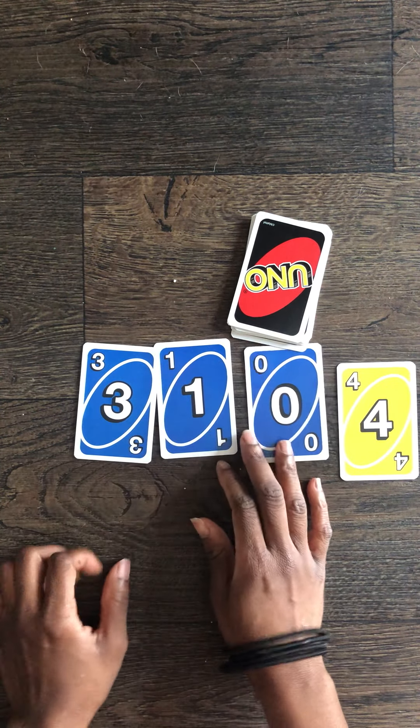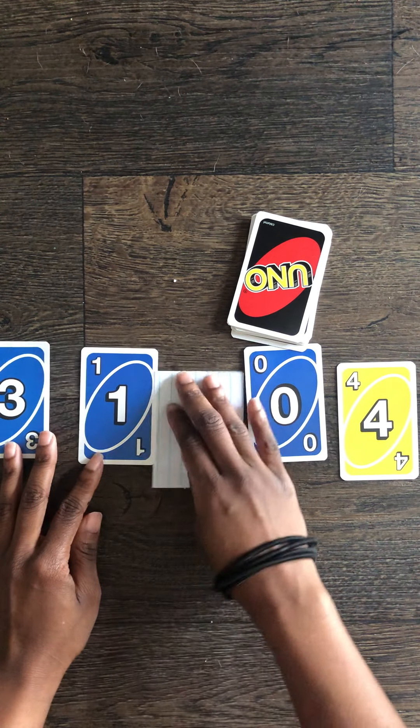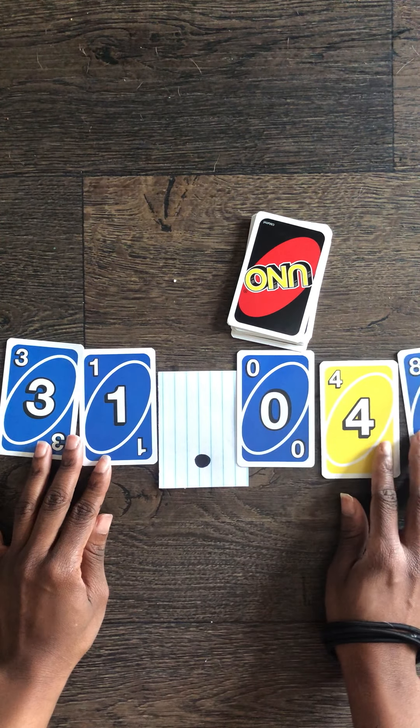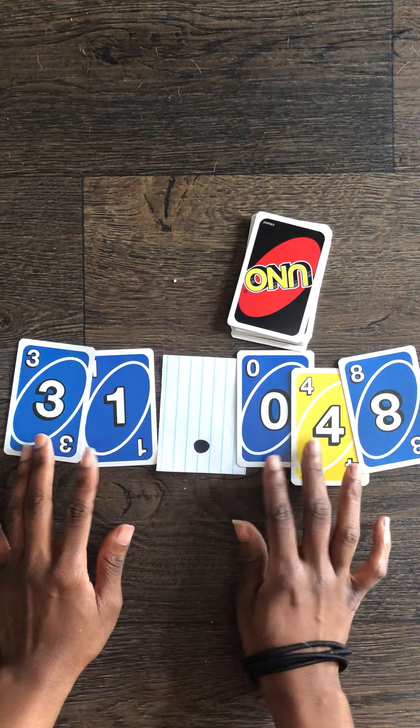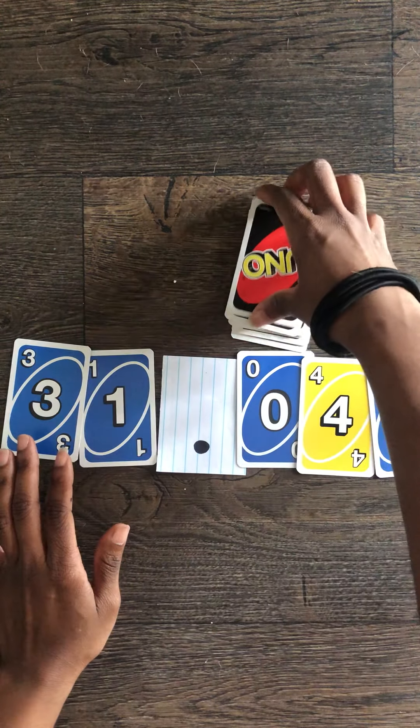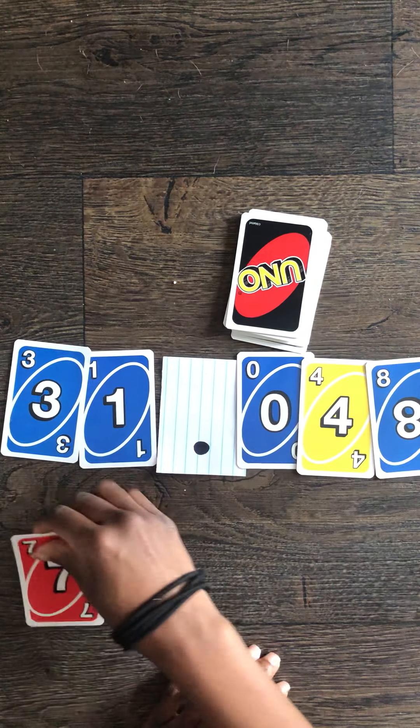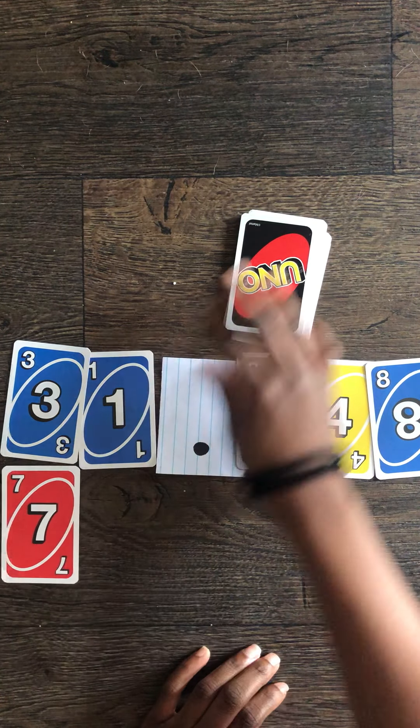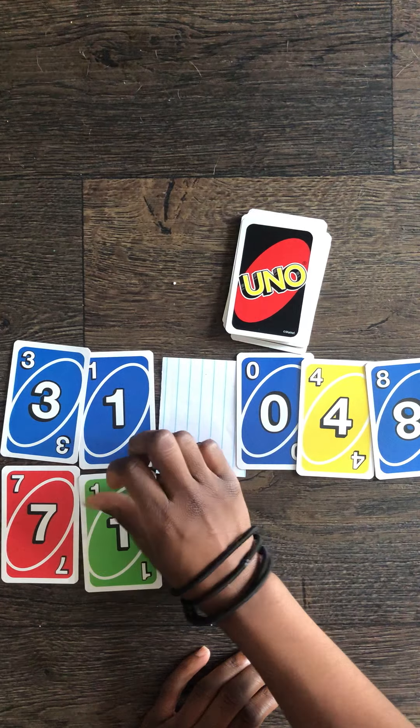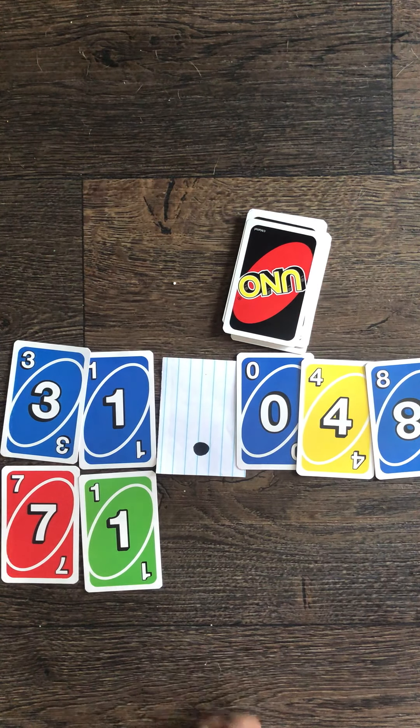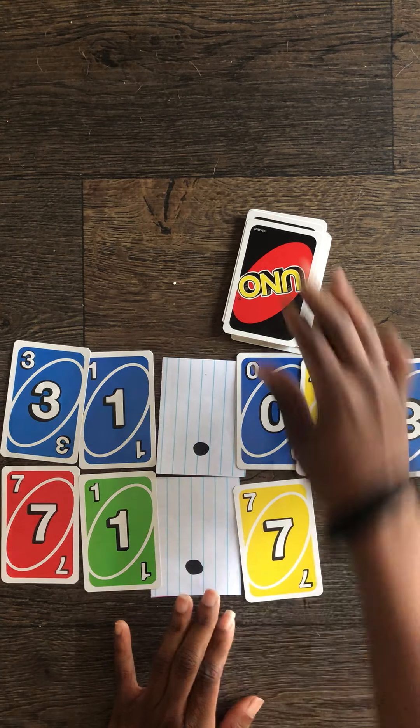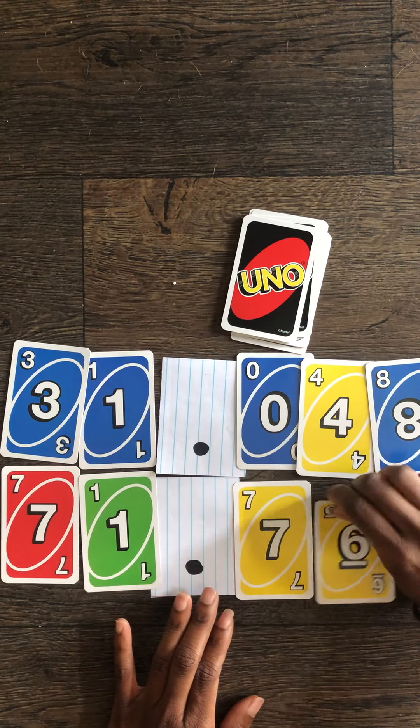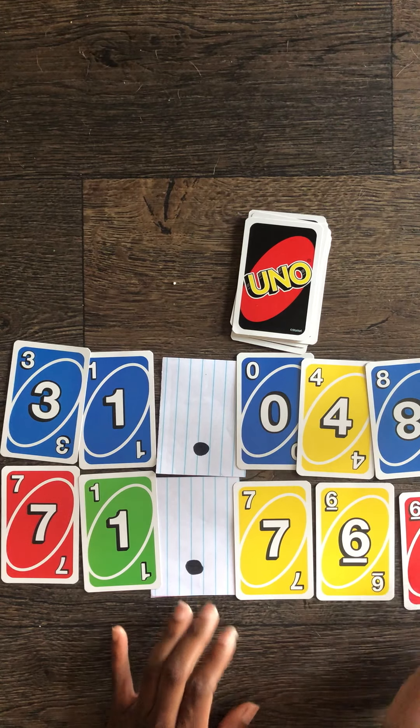Those are my first five digits and I'm gonna place a decimal between here. There we go. Place a decimal between here to separate them up to the thousandths place. And my next five cards. Seven, one. Place a decimal there. Seven, six, and six.